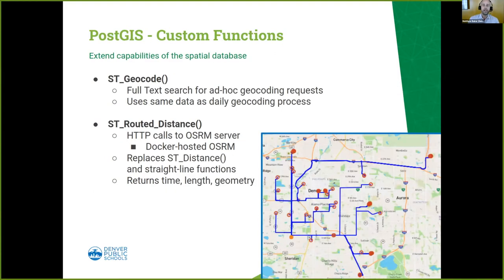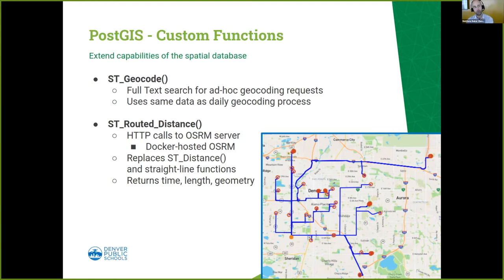We also utilize git tools to manage projects when required, and database administrative tools are available in DBeaver as well. We've been writing some custom functions — Jeff on our team has really gone above and beyond. We created an st_geocode function to utilize the full text search sitting in the database to run ad hoc geocoding requests using authoritative data sources from the city and county of Denver and the state of Colorado. For routing, we've landed on OSRM — using OpenStreetMap as the back-end data on a Docker-hosted server — and created the st_routed_distance function to communicate over HTTP to that OSRM server.